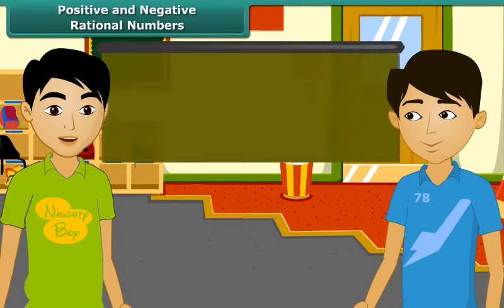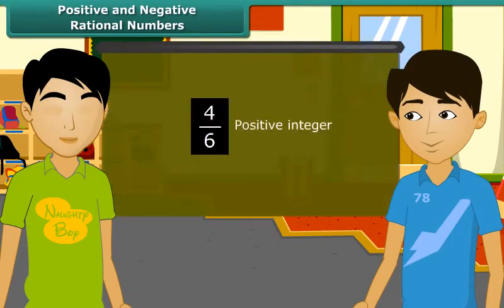Do you know what do we call a rational number which has positive numerator and positive denominator? That rational number is called a positive rational number, I guess.